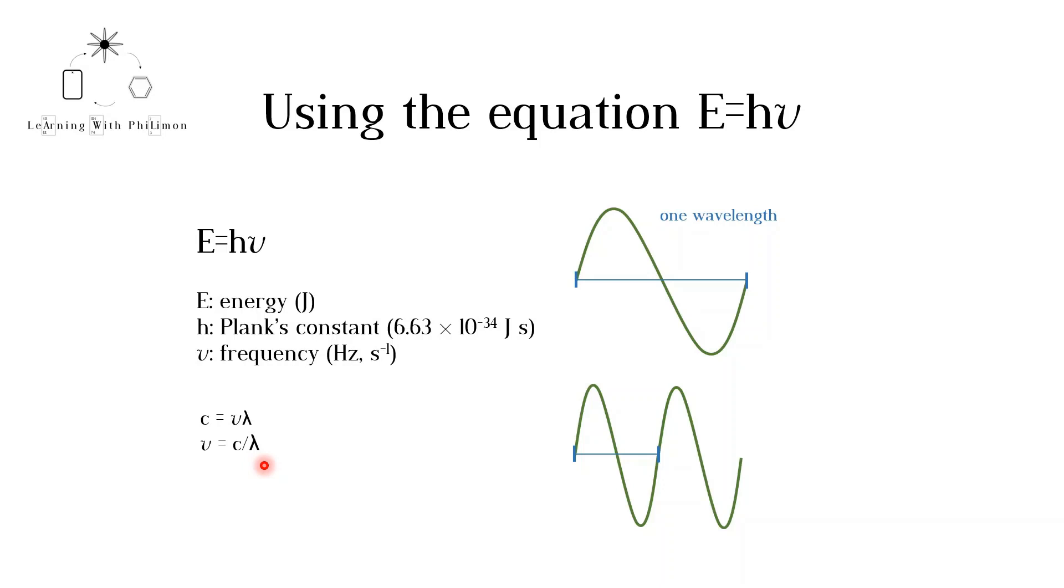Frequency and wavelength are inversely proportional. If a wave has a long wavelength, like the top wave, it will have a low frequency. If a wave has a short wavelength, like the bottom wave, it will have a high frequency.